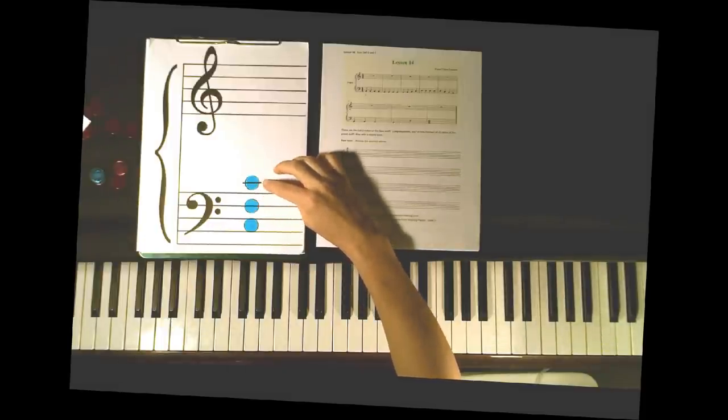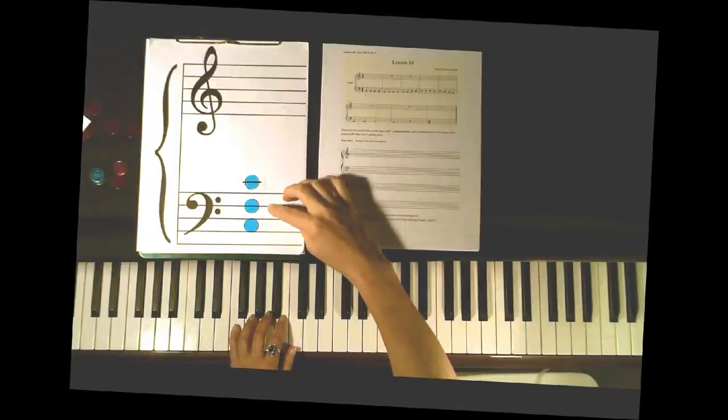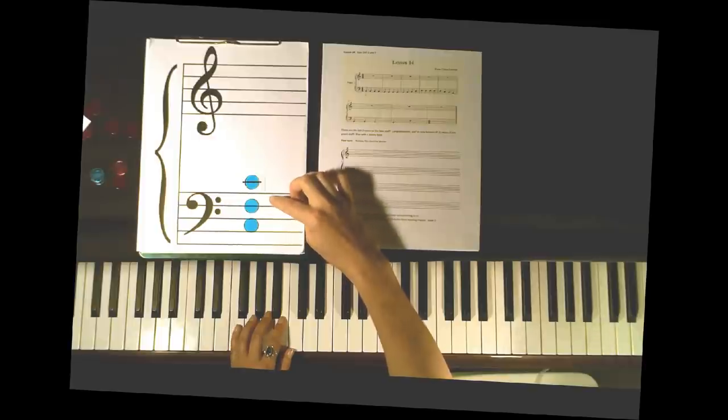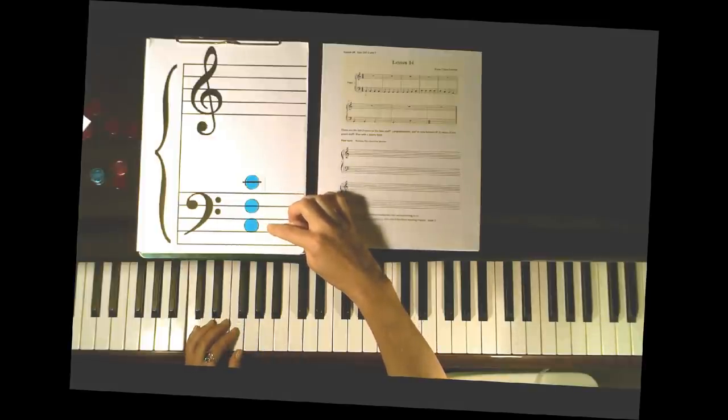This one on its own special ledger line is middle C. The note two lines down is bass F, comes out from F clef. One, two, three C is a low bass C.